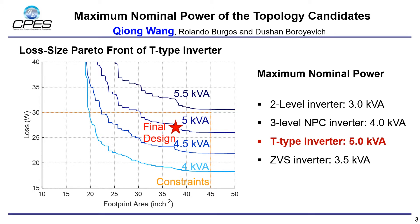To find out the proper topology as well as optimal design, we have explored the loss and size Pareto fronts, which demonstrates the trade-off between loss and size of all topologies on their various power levels. The Pareto fronts shown here belong to the T-type inverter. Considering the loss and size limit, it shows that the T-type inverter can achieve a 5 kVA maximum nominal power, which is higher than the other candidates. Thus, the T-type inverter is selected.